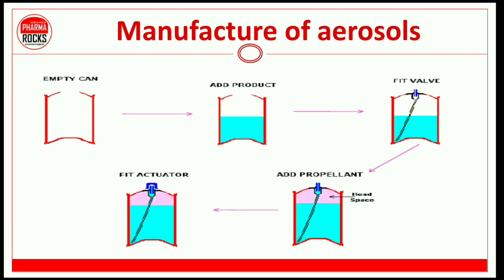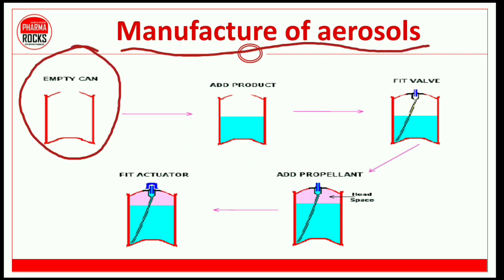Let's look at the main manufacturing of aerosols. First of all, we have an empty can — that means a container. The container can be of different types: plastic container, plastic coated container, glass container, stainless steel, and tin plated container. So once you have a suitable container, you have to add the product.